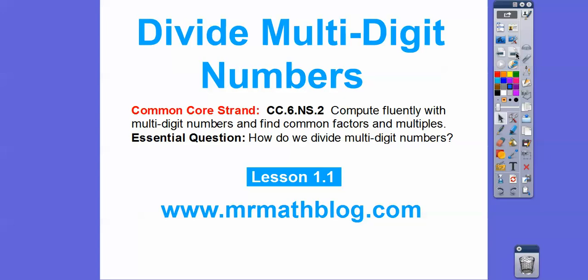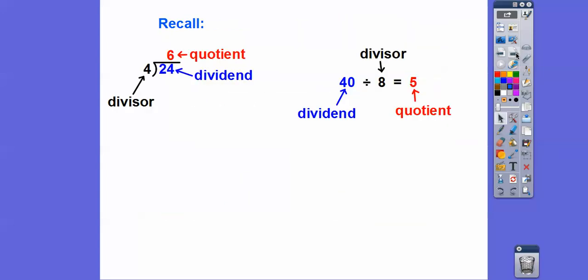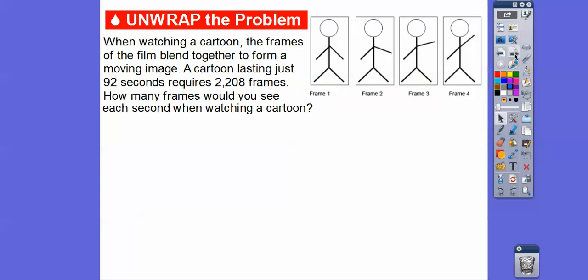All right, so there's our common core strand for our teachers. Our essential question is: how do we divide multi-digit numbers? So recall when we were dividing in our prior classes — the number that we divide with is called our divisor, the number we're dividing into is called our dividend, and our answer is always called our quotient. Remember those words — our quotient is always our answer.